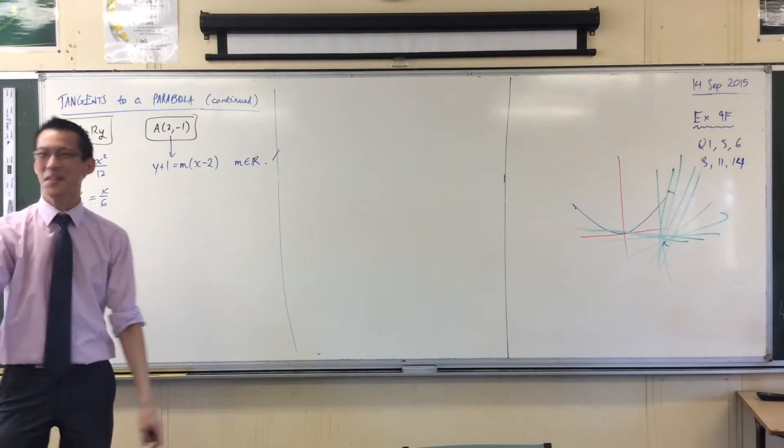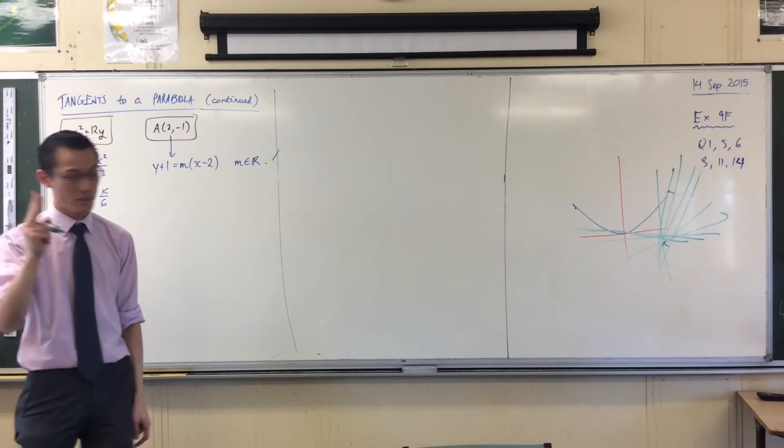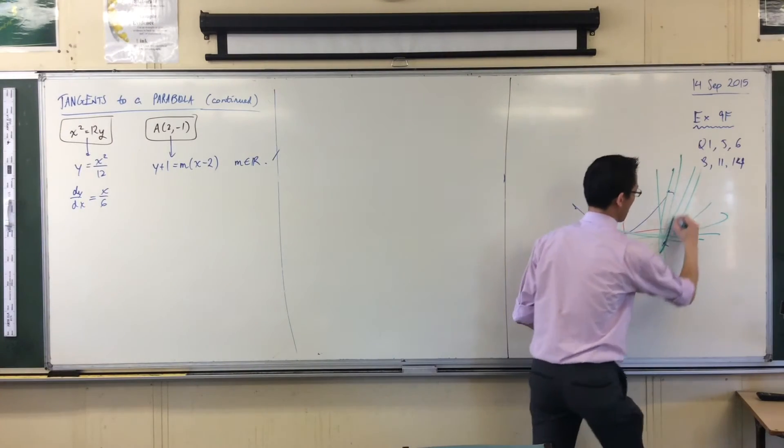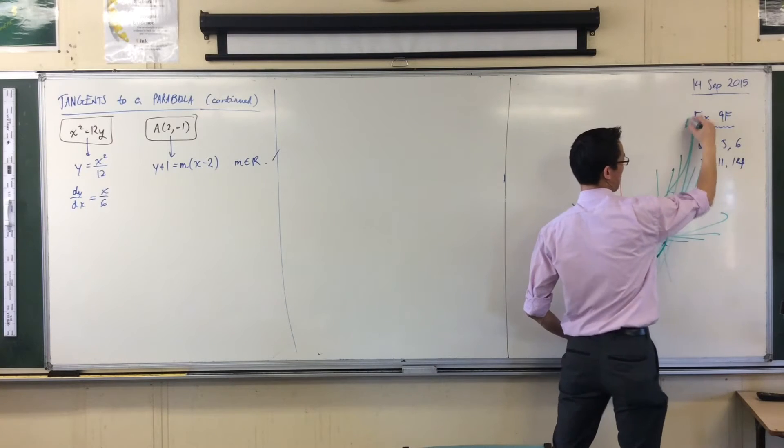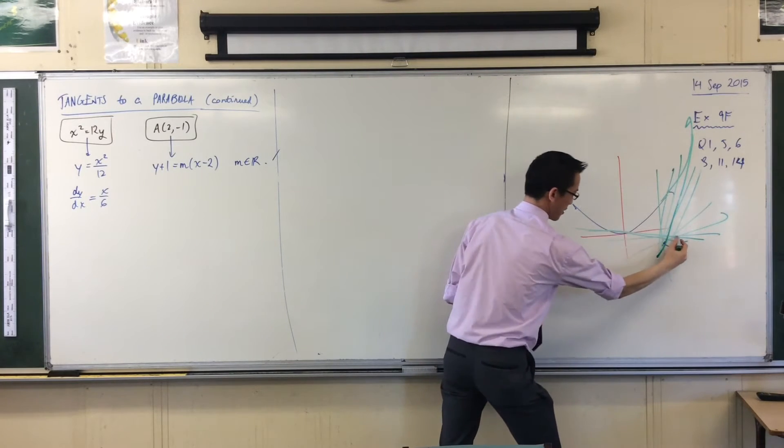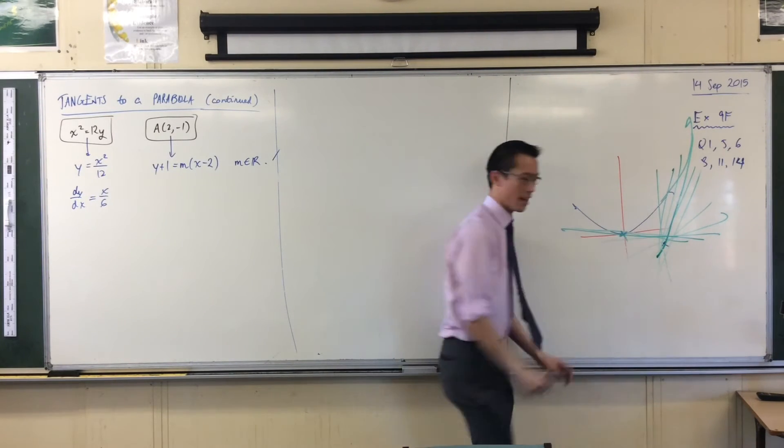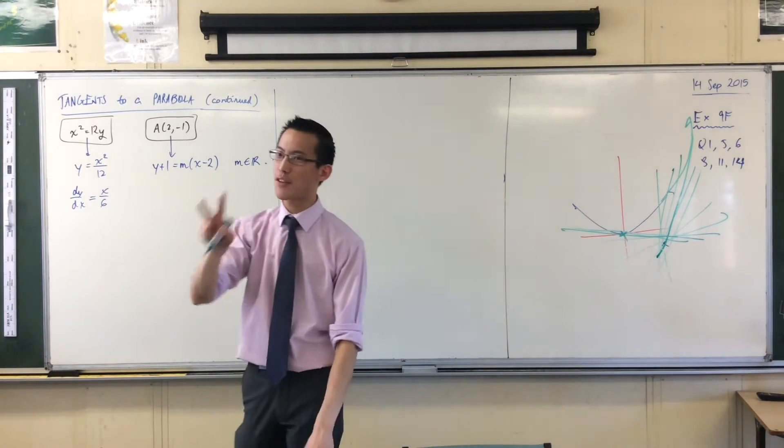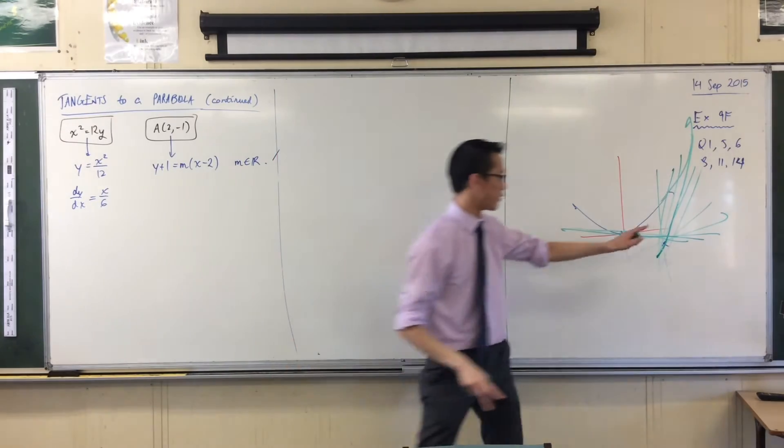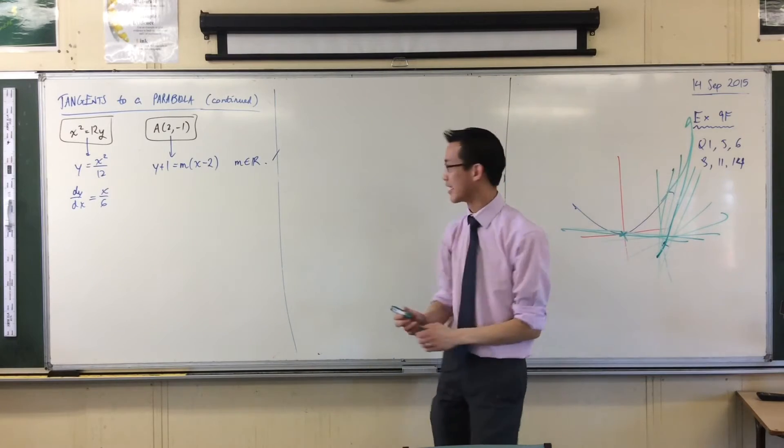Exactly two of them. I just need to find the gradients, and then I'll have locked in which of these infinite green lines I want, okay?